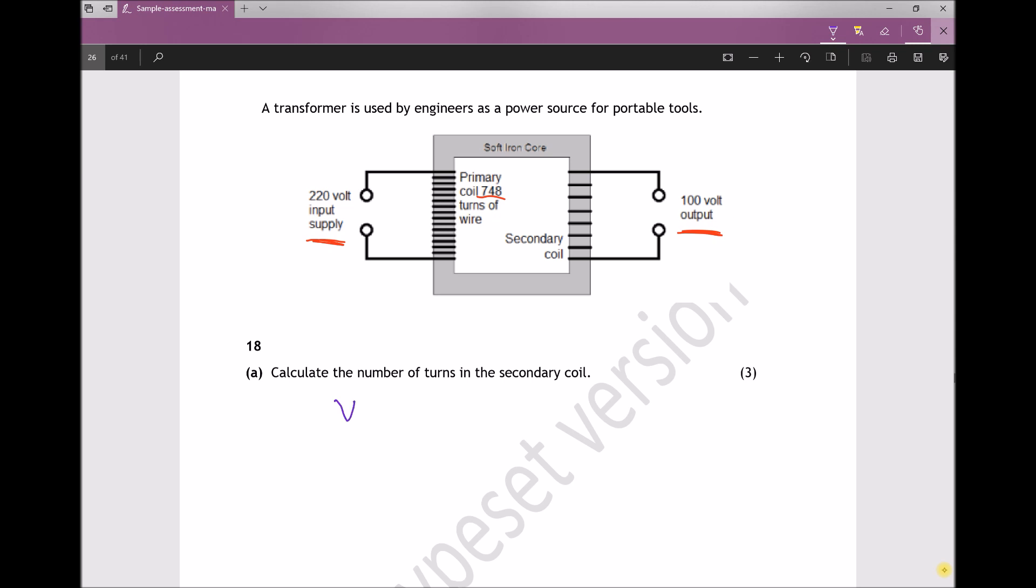Basically, the ratio of the voltages—so the voltage on the secondary coil over the voltage on the primary coil—equals the ratio of the number of turns. So the number of turns on the secondary coil NS over NP.